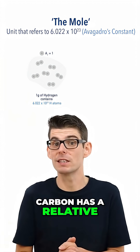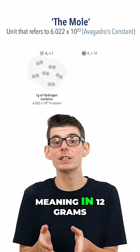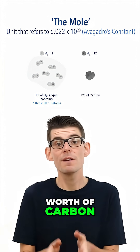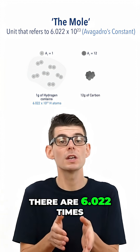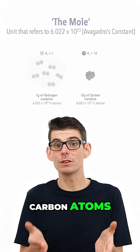Carbon has a relative atomic mass of 12, meaning in 12 grams worth of carbon there are 6.022 times 10 to the 23 carbon atoms.